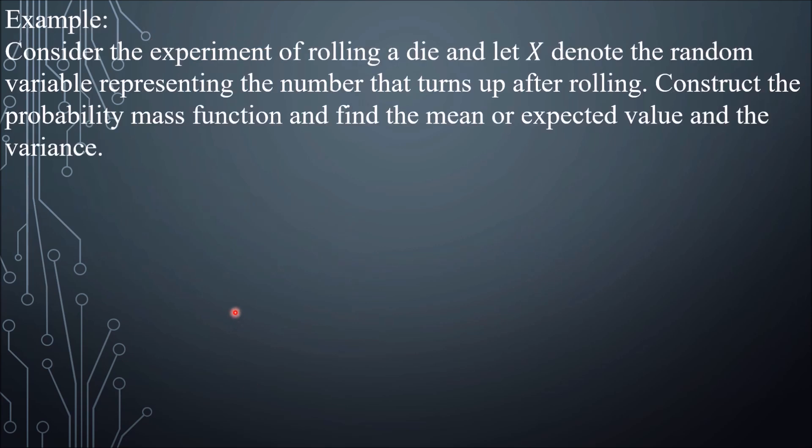Example: Consider the experiment of rolling a die and let X denote the random variable representing the number that turns up after rolling. Construct the probability mass function and find the mean or expected value and the variance.